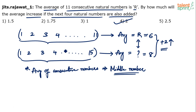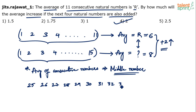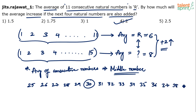You might wonder why we chose 1 to 11 — it's an assumption, but irrespective of what the numbers are, the change in average will always be 2. For example, take 11 numbers starting from 25: 25, 26, 27, 28, 29, 30, 31, 32, 33, 34, 35. For these 11 consecutive natural numbers, the average is the centermost number, which is 30. The next four natural numbers to include are 36, 37, 38, 39.